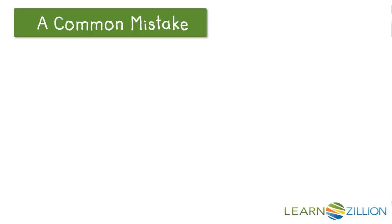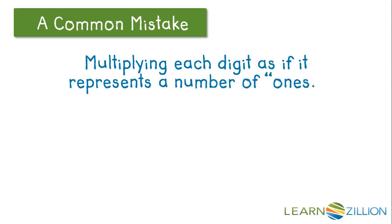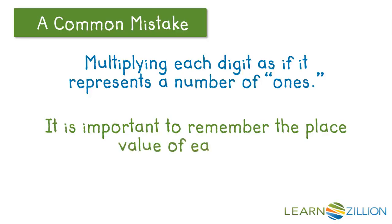A common mistake many students make is multiplying each digit as if it represents a number of ones. It is important to remember the place value of each digit. If we look at the number 36 times 5, we know that the 3 in 36 is worth 30 and the 6 is worth 6. So we need to remember that it's not just 3 times 5 and 6 times 5, it's 30 times 5 and 6 times 5.